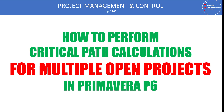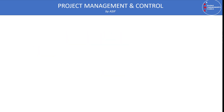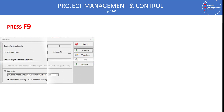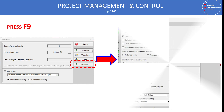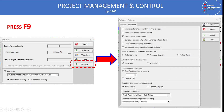When performing the critical path calculation for multiple open projects in Primavera P6, we need to press the F9 button to open the schedule dialog box. In the dialog box, click on the Options button to open the Schedule Options dialog. At the bottom you can see the option which says 'Calculate float based on finish date of each project' and 'open project'.